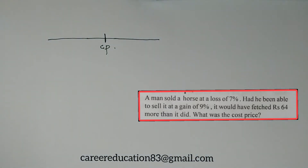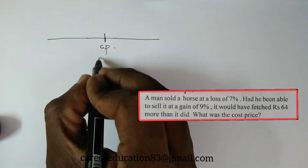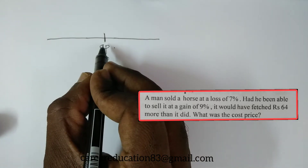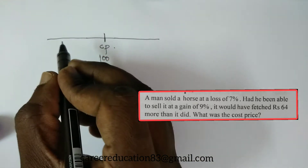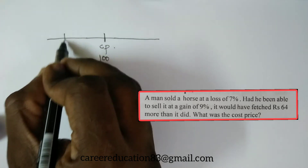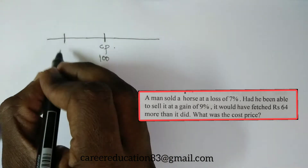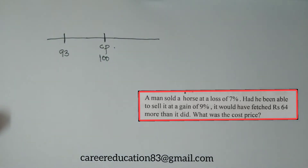A man sold a horse at a loss of 7%. So the cost price is taken as 100%. When there is a loss of 7%, the selling price would be 93% of the cost price. Yes friends, it should be 93%.